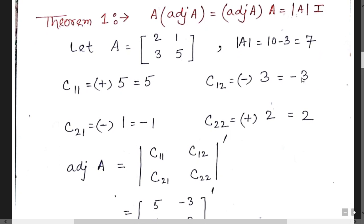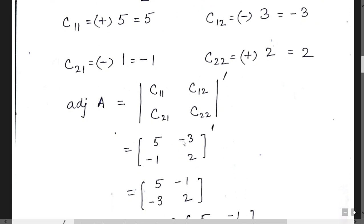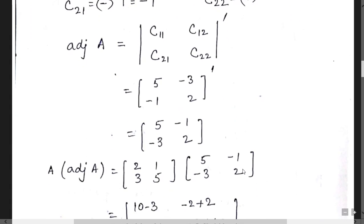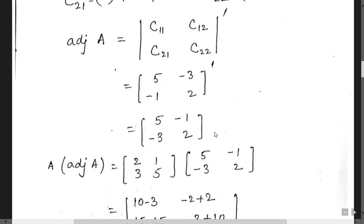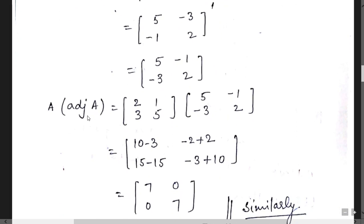Let us find the cofactors. The first cofactor is 5, the second cofactor is minus 3, the third cofactor is minus 1, and the fourth cofactor is 2. Then the adjoint of A — the cofactor matrix C has entries C11, C12, C21, C22 — and we take its transpose. So the adjoint is [5, minus 1; minus 3, 2].